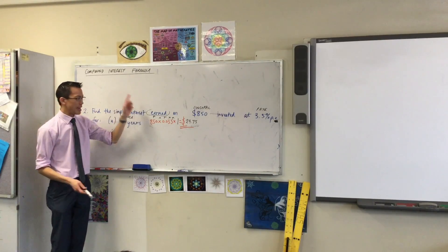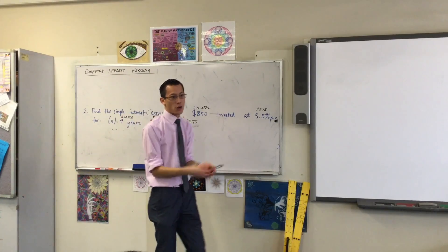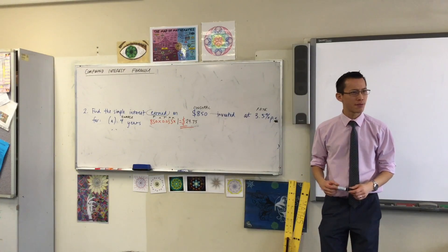Compound interest though, you already know, it doesn't work like this. It doesn't give you the same amount over and over again for however many years. How does it differ? I want you to explain the way that compound interest is different.